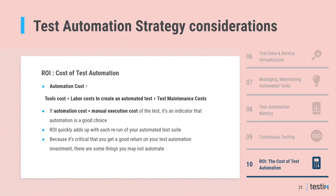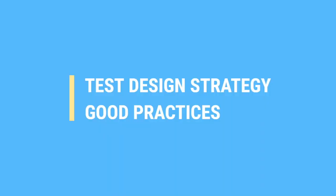Determining the ROI of your test automation efforts can be tricky. A common calculation: tool cost plus labor costs to create an automated test plus test maintenance costs. If the cost of running the test manually is more than the automation cost, it makes sense to automate. But ROI is not just based on cost — benefits like time savings, ability to run with broader data sets, and improved quality should also be factored in. ROI quickly adds up with each re-run of your automated test suite.